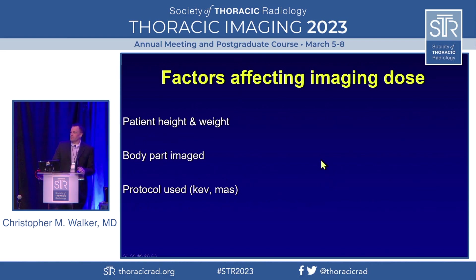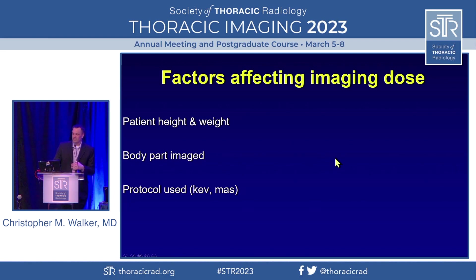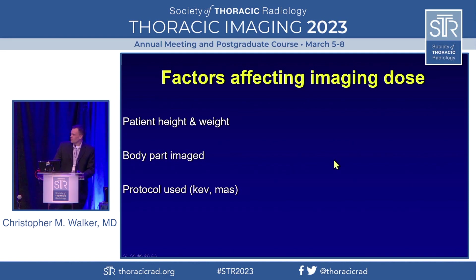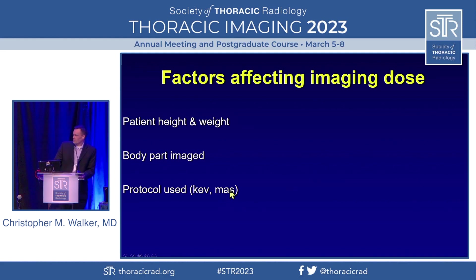Multiple factors affect the dose a patient receives from an imaging study: their height and weight, how old they are — younger patients have a greater risk of radiation-induced damage than older patients — what body part we're imaging, whether it's the brain (which tends to be less affected by radiation than developing breast tissue), what CT protocol we're using, the kiloelectron voltage, and whether we're doing dose modulation with the mAs. All of these factors contribute to the actual dose.